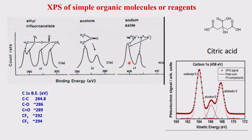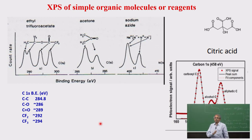Taking sodium azide and looking at the nitrogen 1s spectrum: it appears around 390 to 410 eV. The azide moiety has a nitrogen minus on both ends and a nitrogen plus in the center. The central nitrogen plus has a more buried positive charge, hence greater binding energy. The two terminal negatively charged nitrogens come at much lower binding energy. This illustrates that positively charged atoms come at higher binding energy, negatively charged ones at lower binding energy.